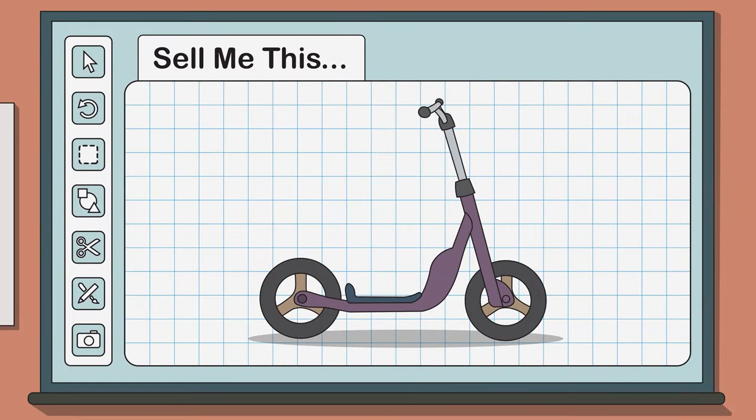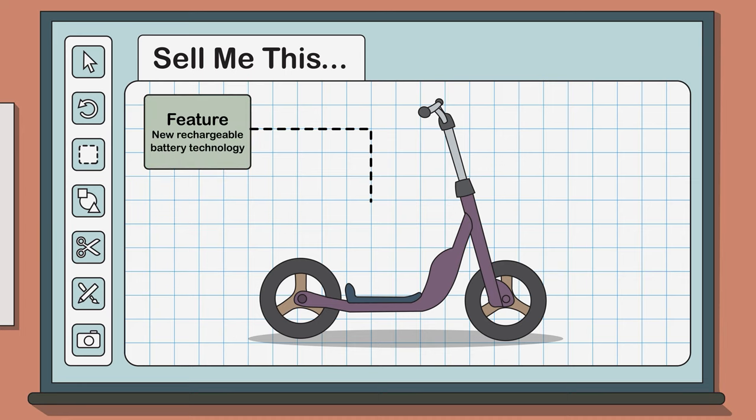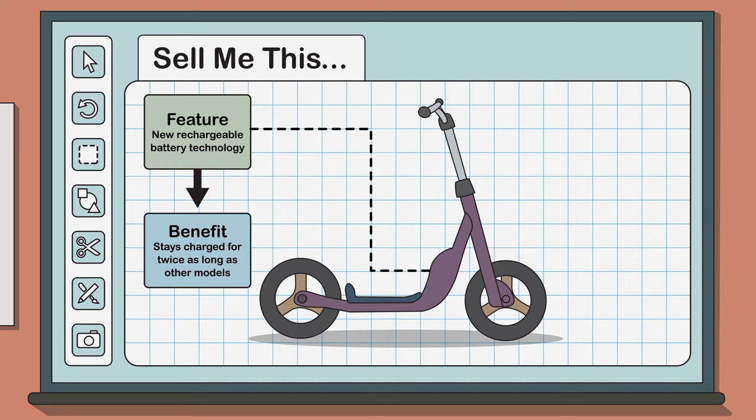For example, you might be trying to sell an electric scooter that has new rechargeable battery technology, a feature, that allows it to stay charged for twice as long as current models, a benefit.